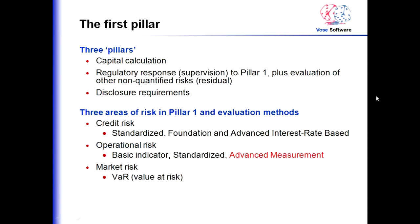There are three pillars to Basel II. The first is the calculation of the capital that would be required. The second pillar is the regulatory response — the supervision of Pillar 1 — which includes evaluating models that a bank will produce in order to estimate its capital reserve requirement, plus evaluation of other non-quantified risks called residual risks, such as market risk and pension risk. The third pillar is the disclosure requirements to make sure that a bank is open and honest about the risks it takes.